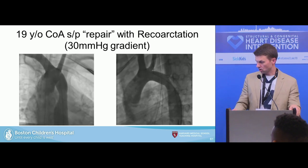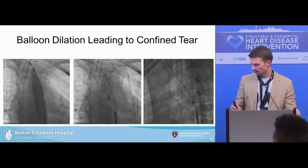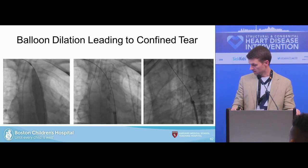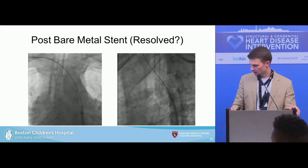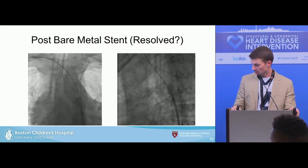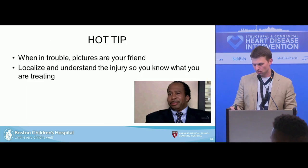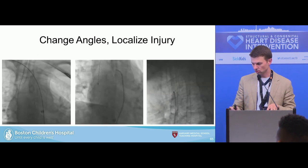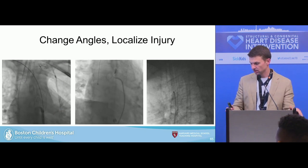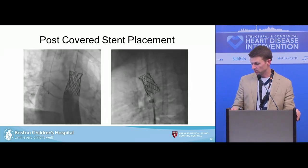Here's a 19-year-old with coarctation repair, re-coarctation, and a 30-mmHg gradient. Balloon dilation was performed, leading to a confined tear. Covered stents weren't available — they were on the shelf only as part of the trial — so a bare-metal stent was chosen. It looks completely covered, but if you're in trouble and suspect vessel injury, pictures are your friends. Localize and understand the injury so you know what you're treating. Don't assume the injury is resolved after one image — change camera angles, localize that the injury is still present, further localize with a catheter, and then you know exactly where to land your covered stent.